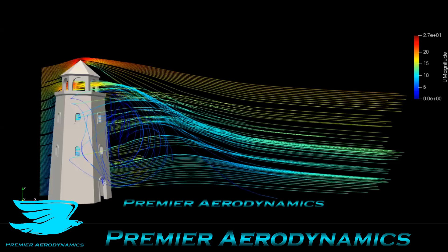What's up, amigos? Today we're looking at the aerodynamics of a guard tower. We have the guard tower here on the left, with the flow going from left to right, and all these streamlines. The streamlines go from 0 to 27 meters per second, from blue to red. And you can see there's just so much wake behind here, with all these streamlines going crazy.